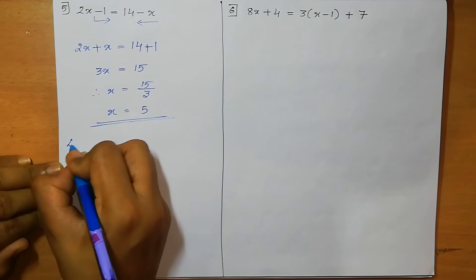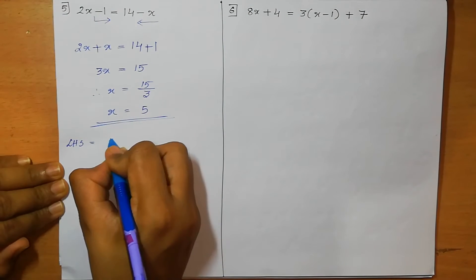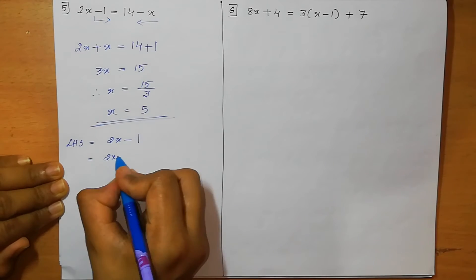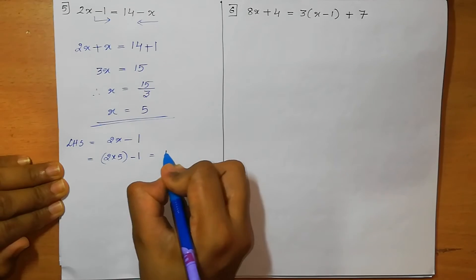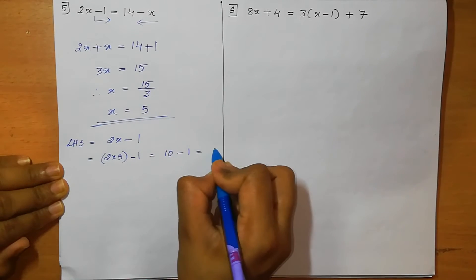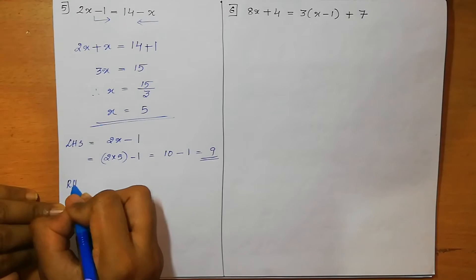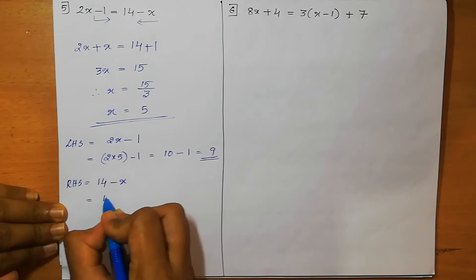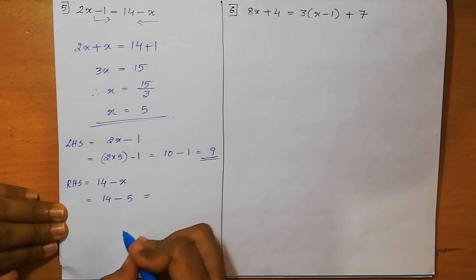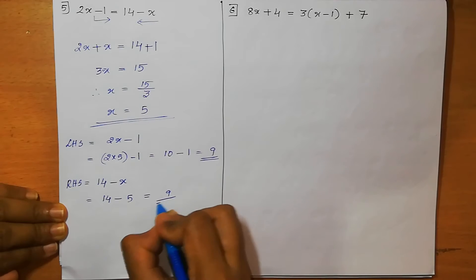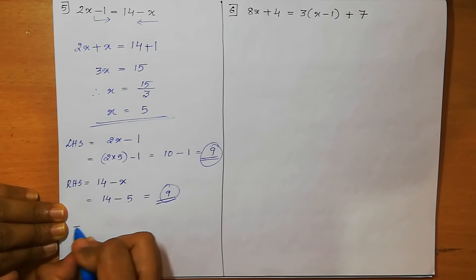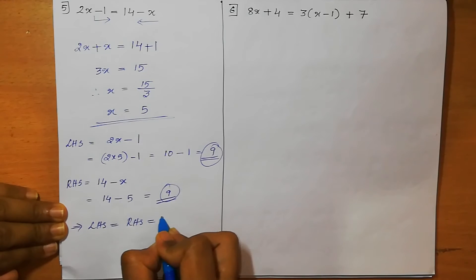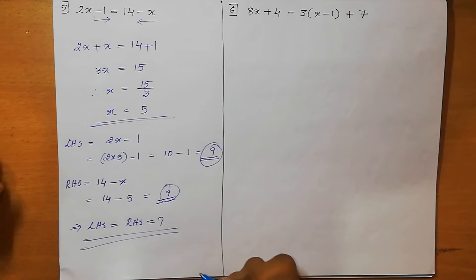We verify: LHS = 2x minus 1 = 2 × 5 minus 1 = 10 minus 1 = 9. RHS = 14 minus x = 14 minus 5 = 9. LHS equals RHS. Hence verified.